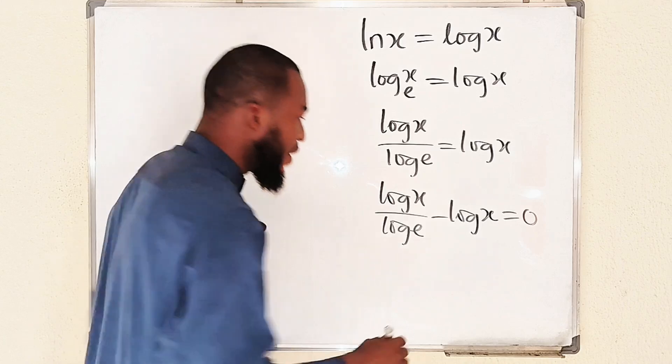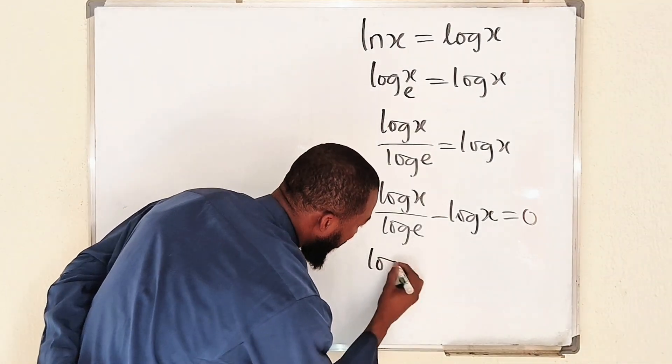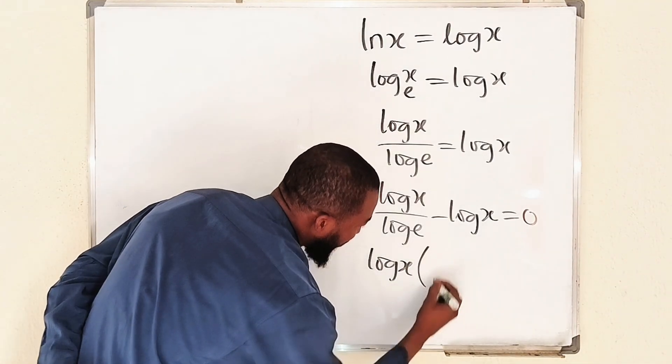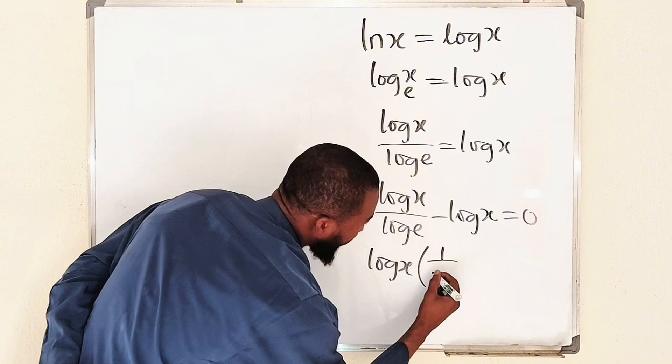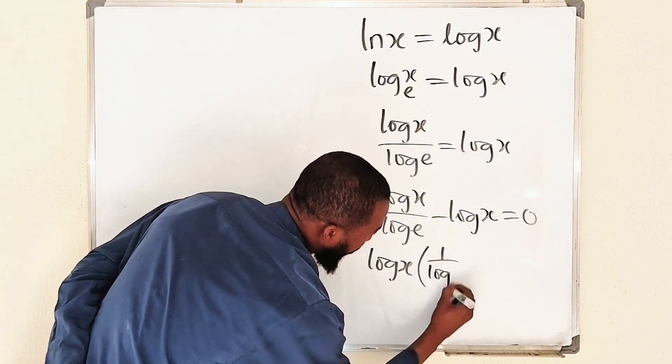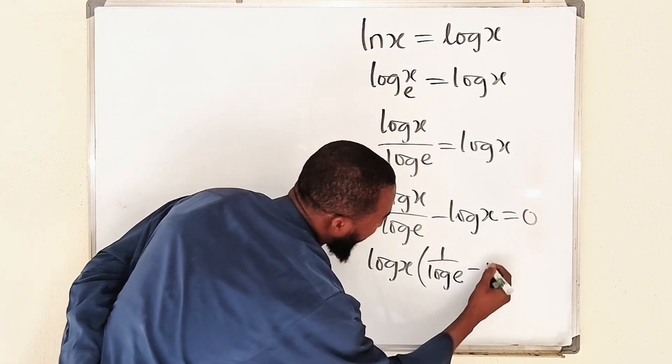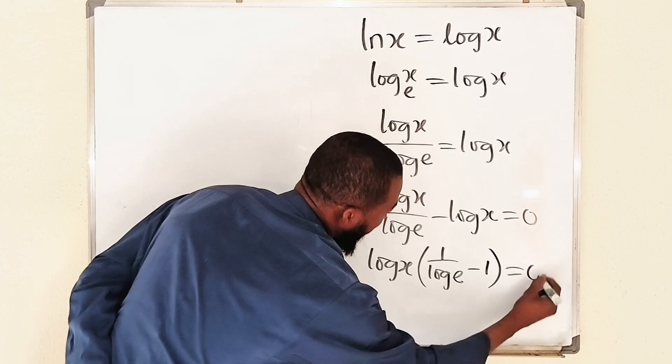We have log of x in common. Let me bring it outside. Log of x outside. Inside, we have 1 divided by log of e, then minus 1 equals 0.